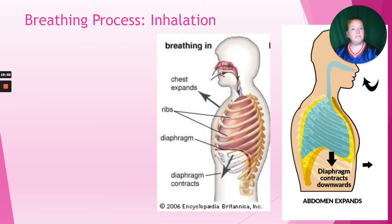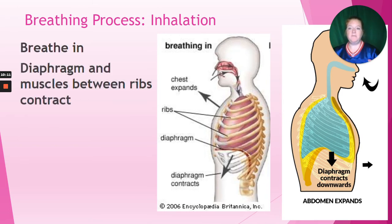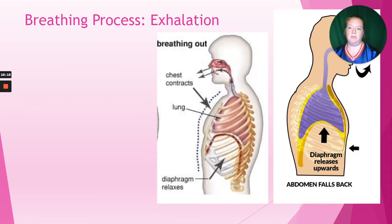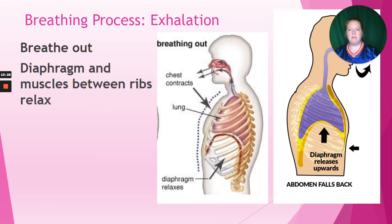What does the breathing process look like? We have inhalation - breathing in. When we breathe in, the diaphragm and the muscles between our ribs contract, creating a sort of vacuum that pulls air in. Exhalation is when we breathe out - the diaphragm and the muscles between the ribs relax.